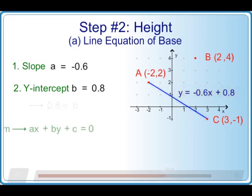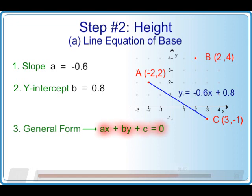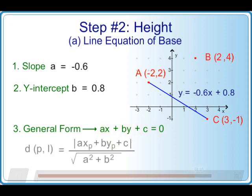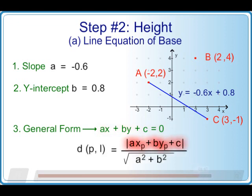The last step is to convert this equation to the general form, which is ax plus by plus c is equal to 0. The reason is that the point to line distance equation is based on the general form.